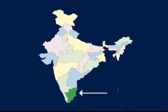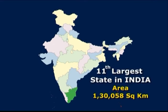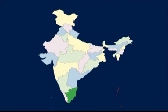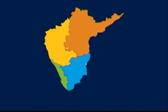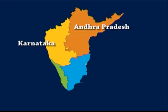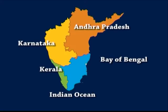Tamil Nadu occupies the eastern side of the Indian Peninsula. This is the 11th largest state in India by area, covering 1,30,058 square kilometers. It lies in the southernmost part of the Indian Peninsula. It is bordered by Andhra Pradesh in the north, Karnataka and Kerala in the west, Bay of Bengal in the east, and the Indian Ocean in the south.